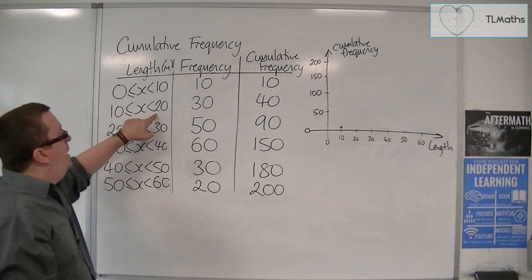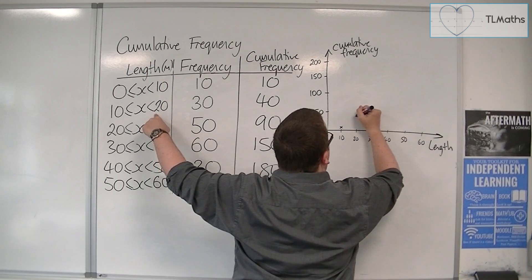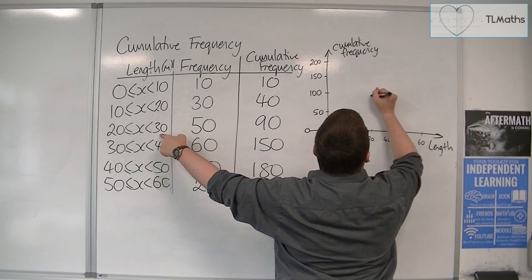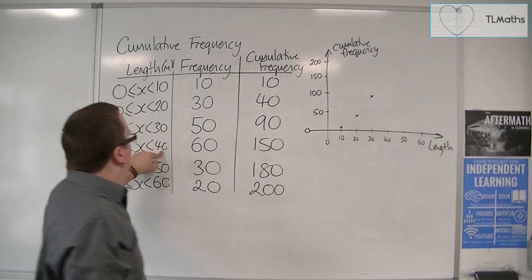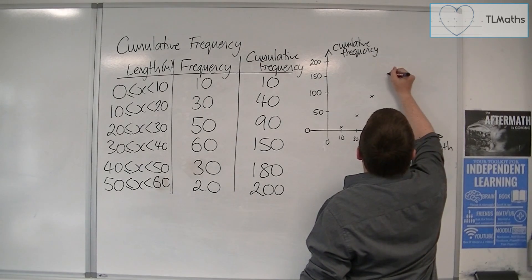Then we'd have 20, 40. So 40 would probably be around there. 30, 90, 30, and then 90. 40, 150. So 40, 150 is up there.